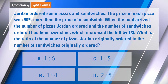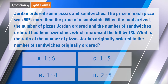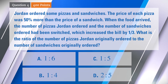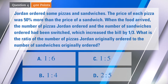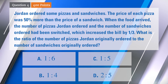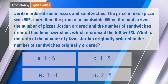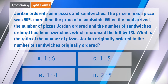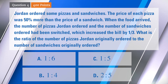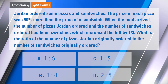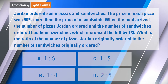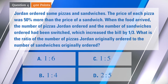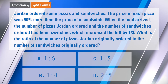Jordan ordered some pizzas and sandwiches. The price of each pizza was 50% more than the price of a sandwich. When the food arrived, the number of pizzas Jordan ordered and the number of sandwiches ordered had been switched, which increased the bill by one-third. What is the ratio of the number of pizzas Jordan originally ordered to the number of sandwiches that Jordan originally ordered?